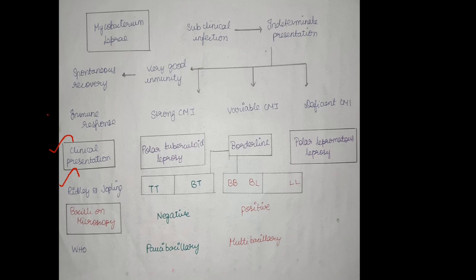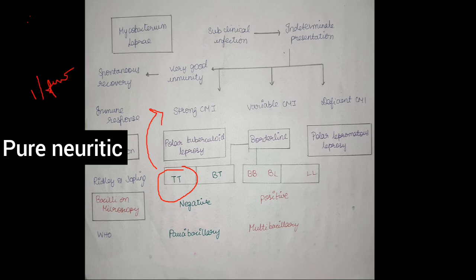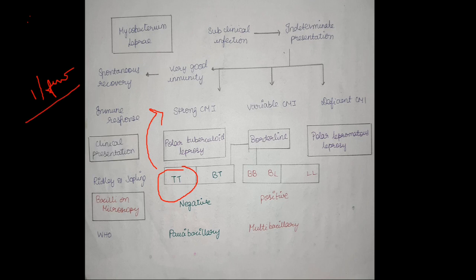This completely depends on the immune response. We have two polar forms: one is tuberculoid leprosy and the other is lepromatous leprosy. Then we have three borderline types: borderline tuberculoid, borderline lepromatous, and in between, borderline type. Tuberculoid leprosy has strong cell-mediated immunity with single or few patches.